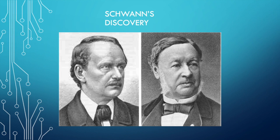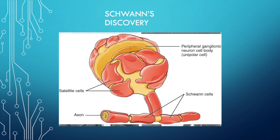As Schwann did this, he noticed something interesting surrounding the neural cells in the peripheral nervous system. Boom — the Schwann cell! At the time, it was unknown what the true function of the Schwann cell was, and its importance for the myelin sheath.